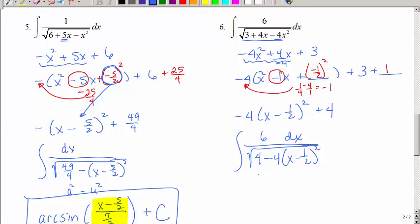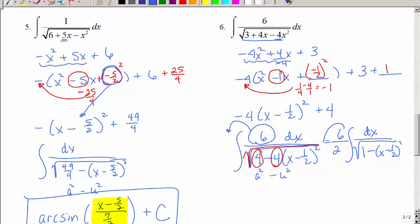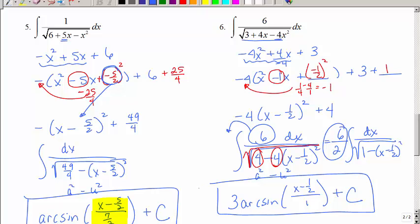Now you could take this in terms of a squared minus u squared, but I think we can make it a little bit prettier. Since those both have a 4, I could factor that out. Don't forget it's under the square root sign, so the square root of 4 is 2. So I'm also going to take this 6 out as well. So I have 6 over 2 integral of dx of the square root of 1 minus x minus 1 half squared. So of course that's 3. Now I have the arc sine of u over a plus c.